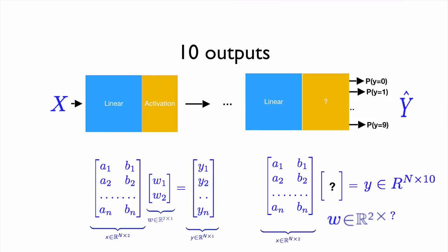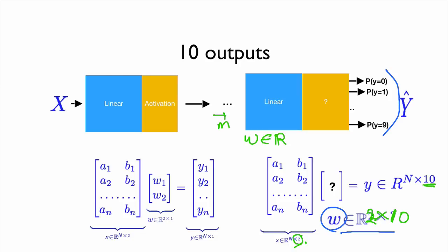Now if we want to produce 10 outputs, what will be the size of our weight matrix? Suppose our input dimension is 2. We want to produce an n×10 matrix, so the weight matrix must be 2×10. More generally, if the input size is m, then we need an m×10 matrix for w, and it will produce 10 outputs.